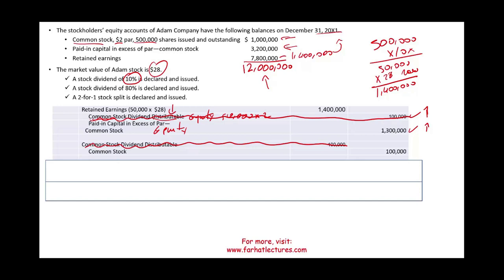So what happened overall? We took 1.4 million from retained earnings. We allocated 100,000 to Common Stock and 1.3 million to Paid in Capital. The net effect is zero — we still have 12 million of equity. This is the entry, the computation, and the effect on equity when it comes to a small stock dividend.